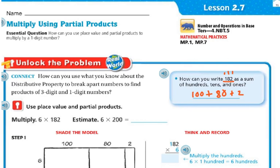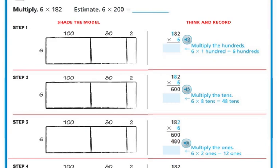Now it says use place value and partial products. We're going to multiply 6 times 182. If you're going to estimate that, 182 is close to 200, so you can easily do 6 times 200. And 6 times 2 is 12, and then I have my two zeros, so it would be 1,200. So my total for this should be somewhere near 1,200. Earlier we broke the 182 down — remember it was 100 plus 80 plus 2 — so now we're going to take our 6 and multiply to make our partial products.